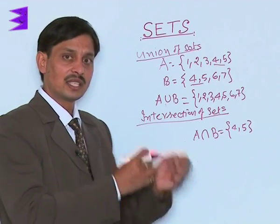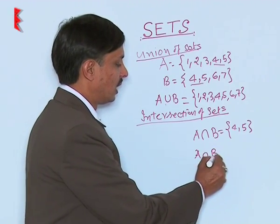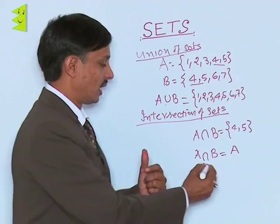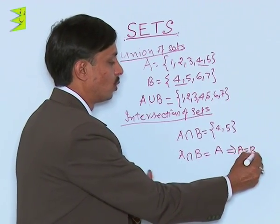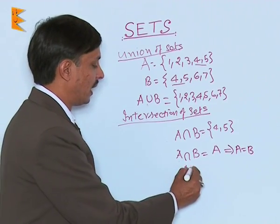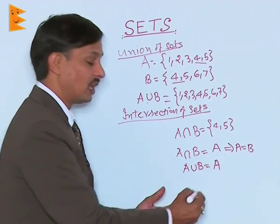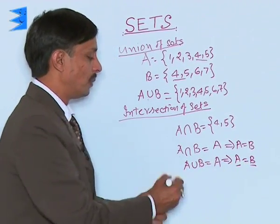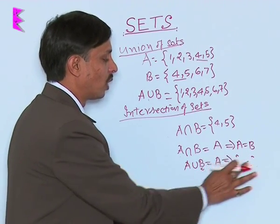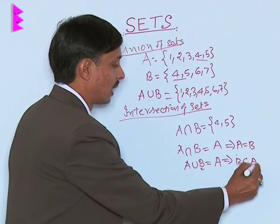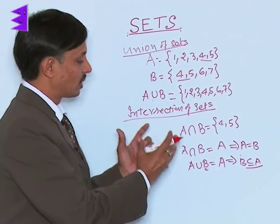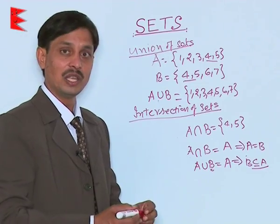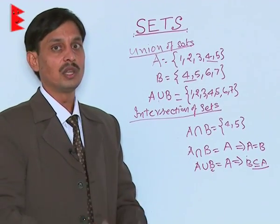If we find A intersection B equal to A, it means that both sets are equal — that is, A equals B. Or if A union B is equal to A or B, this also implies that A is equal to B. It may also be possible that A is not equal to B, and it may indicate that B is a subset of A. There are some more results regarding the applicability of intersection and union of sets which we will explain further.